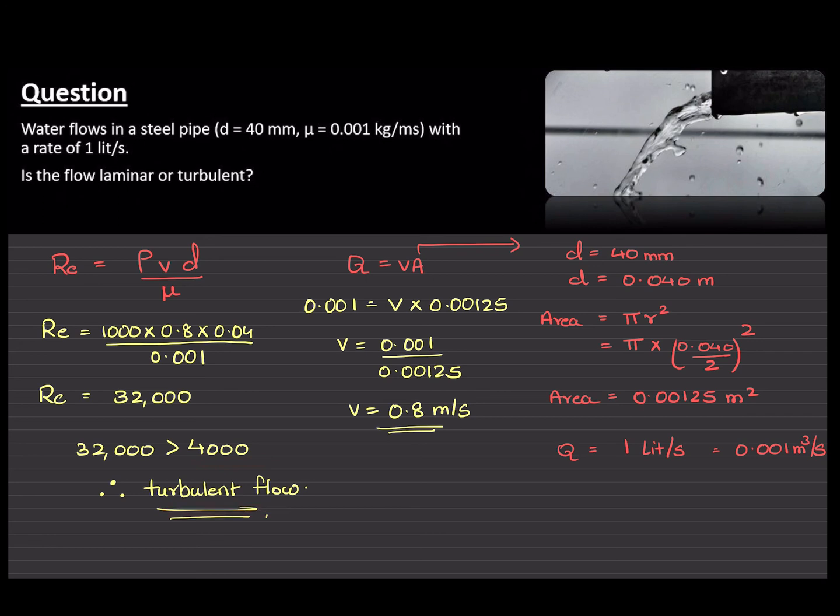Say, for example, we got something like 1,200 or 95. That means the flow is laminar. If it is less than 2,000, it is going to be laminar. More than 4,000 is going to be turbulent. In between is a state of transition. Okay, hope you understood this example.